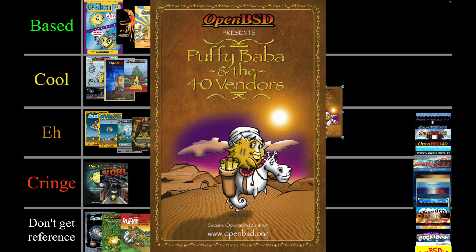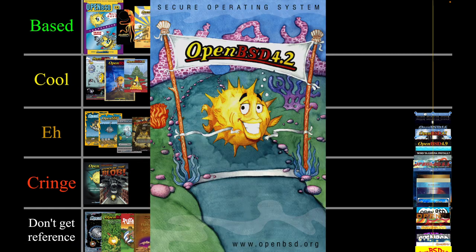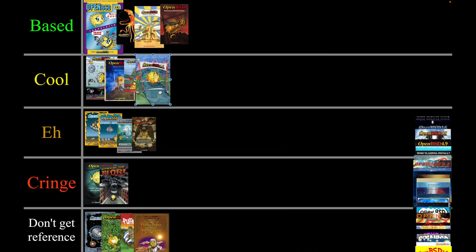Puffy Baba and the 10 vendors — once again I don't get the reference at all. But this is where they start putting 'secure operating system' at the top and I think that's pretty cool. Since this one kind of set that trend, I'm going to put it in cool.